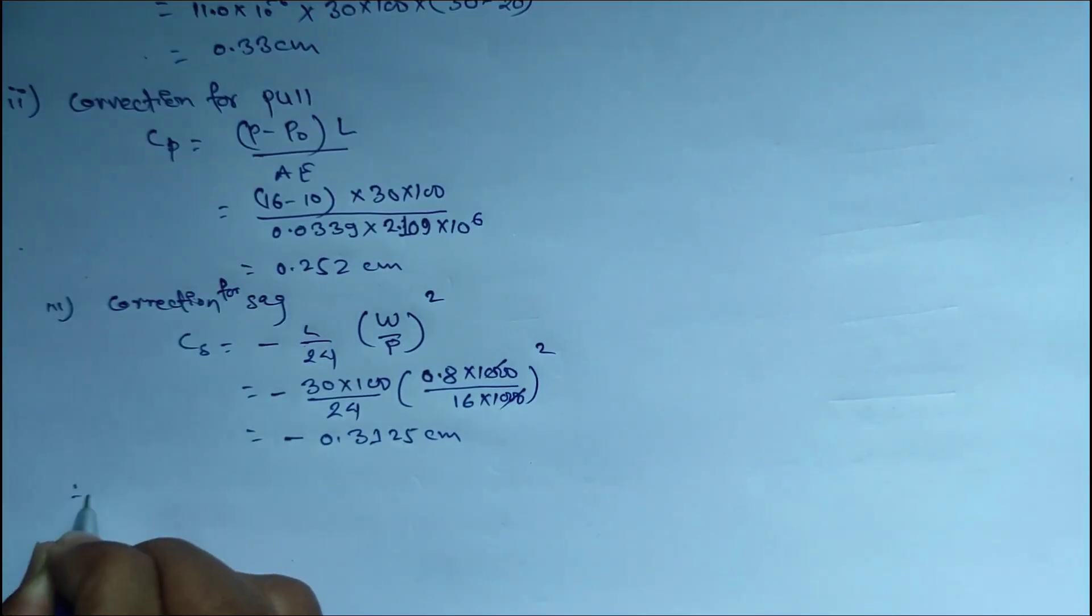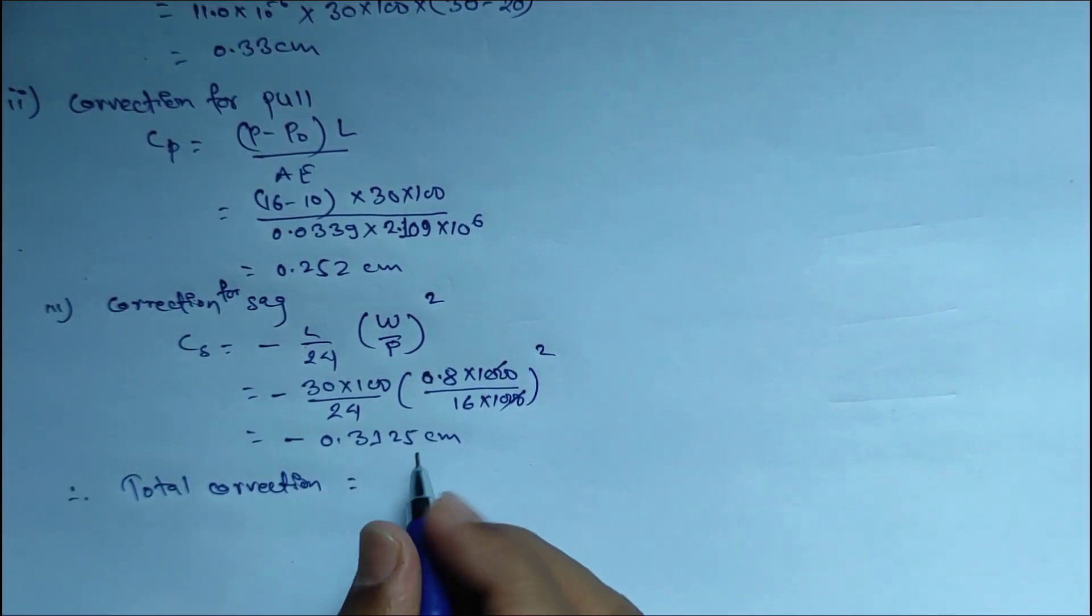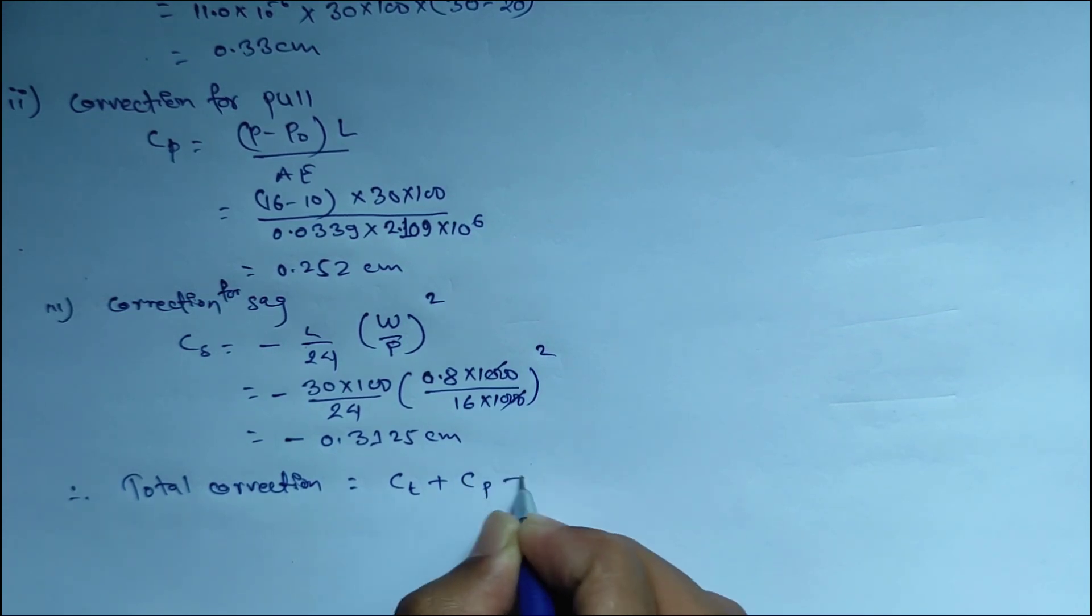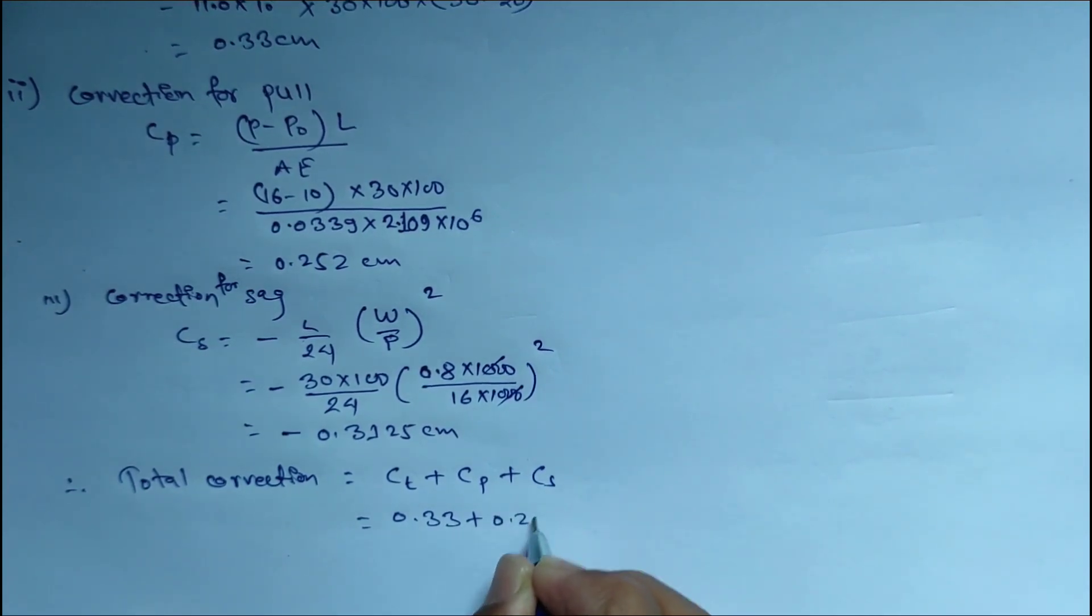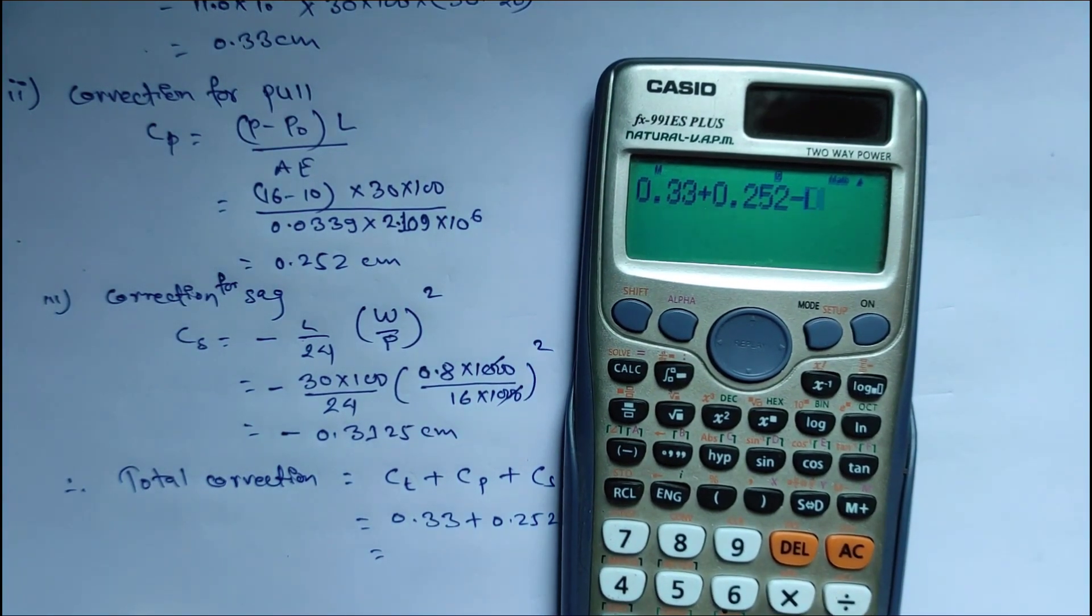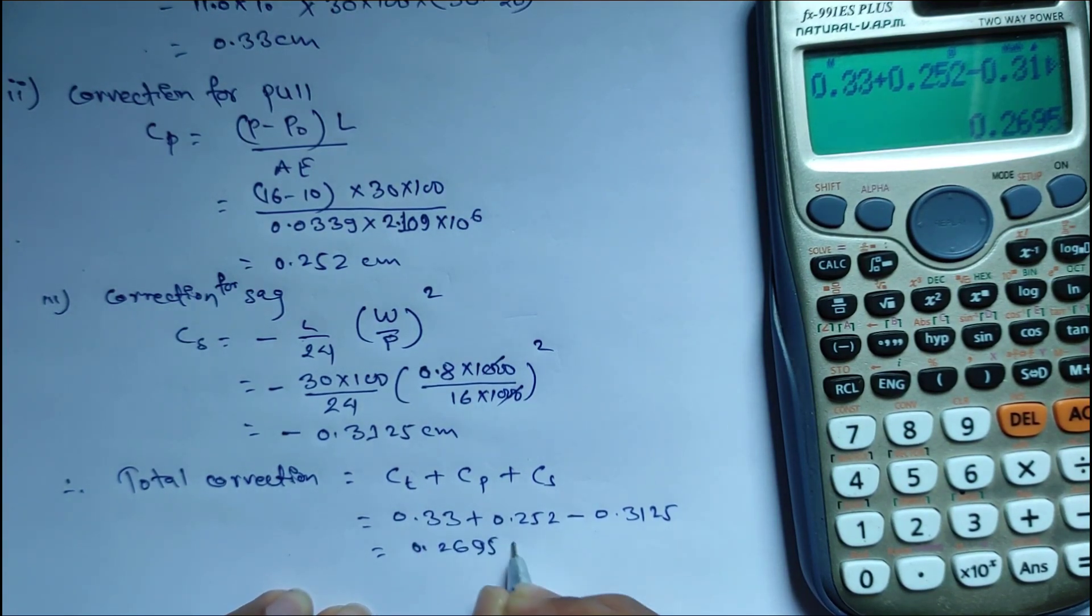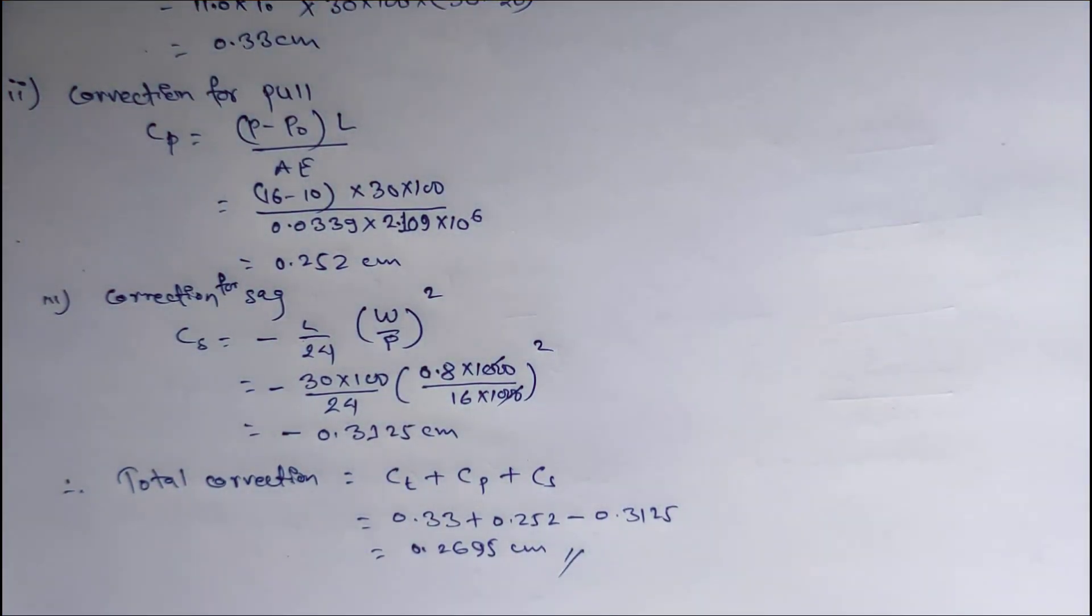Total correction equals Ct plus Cp plus Cs. Total correction equals 0.33 plus 0.252 minus 0.3125, which equals 0.2695 cm. This is the tape correction.